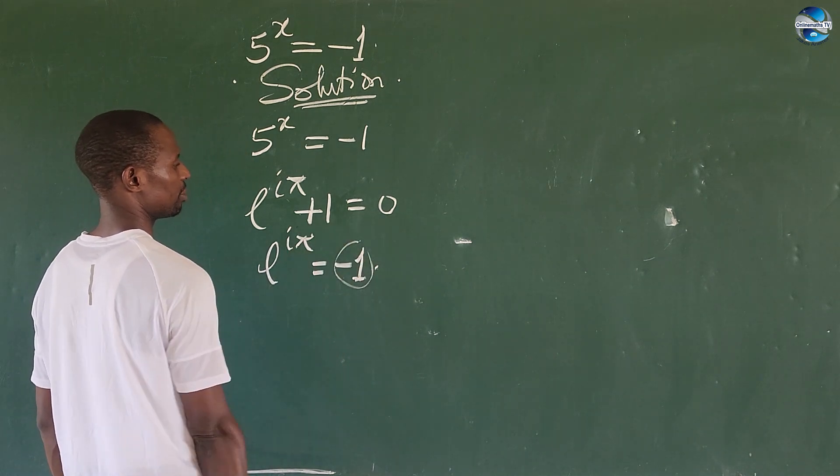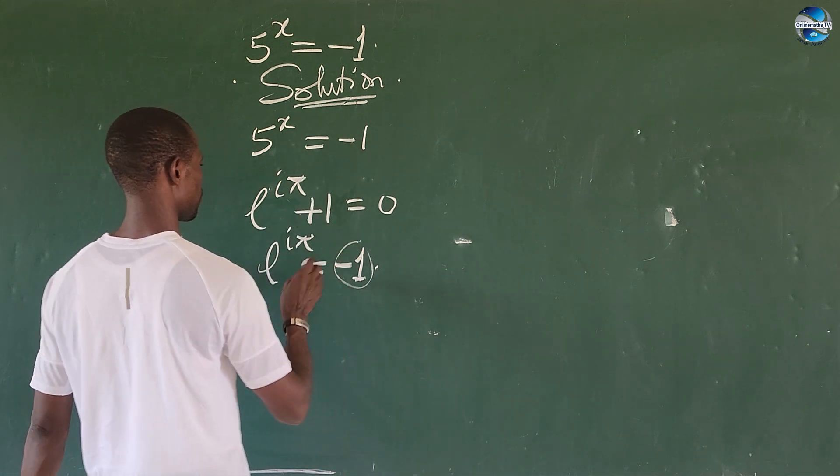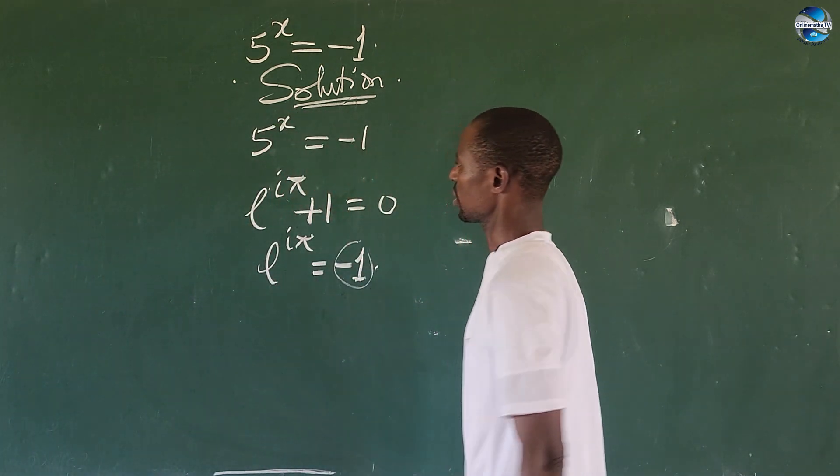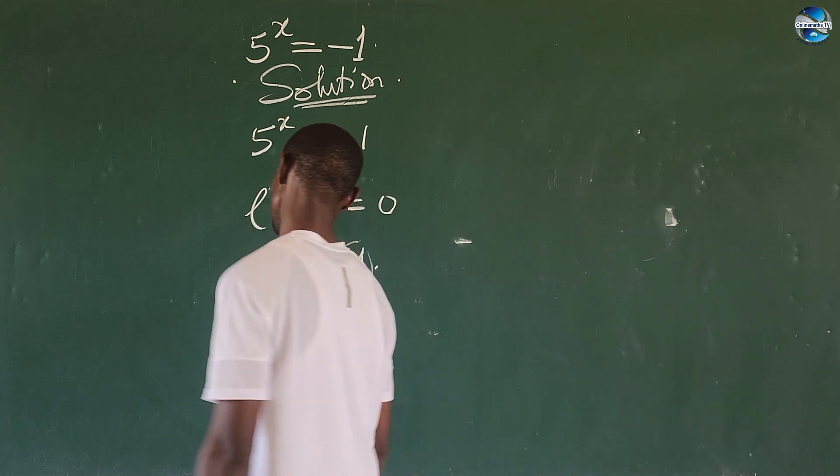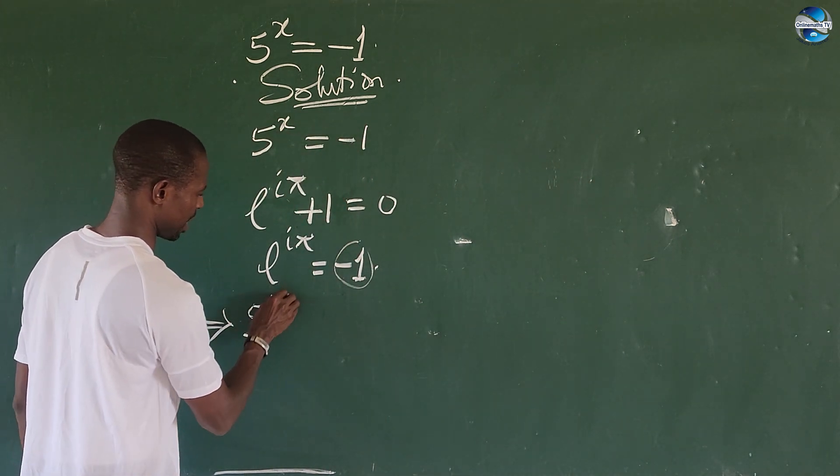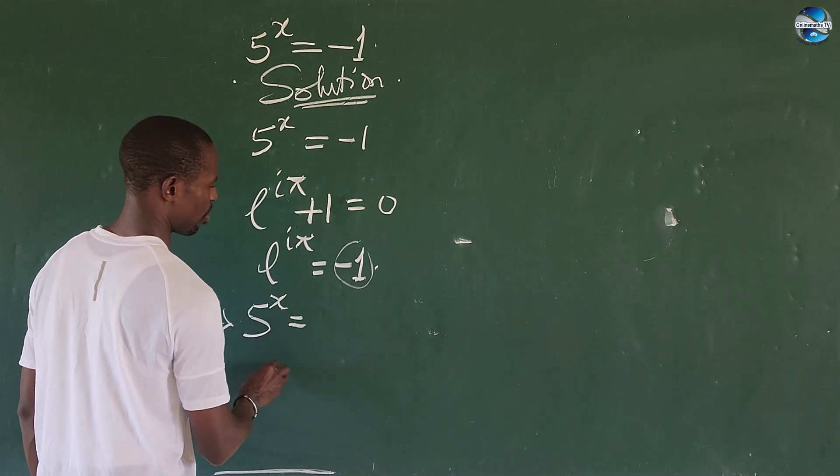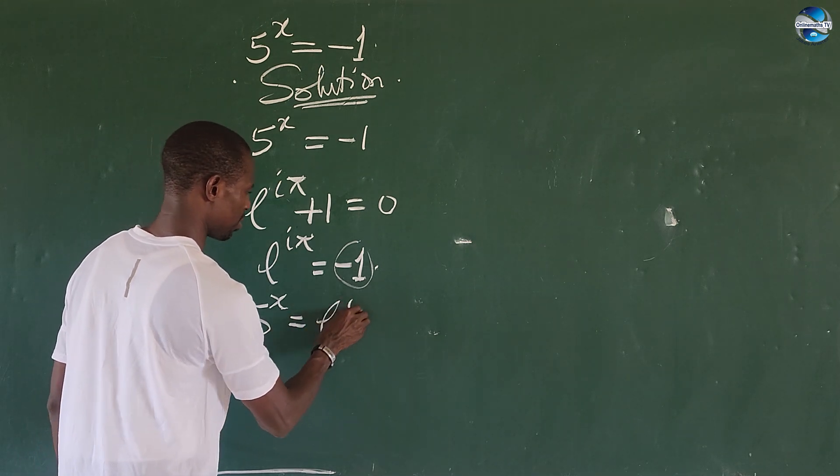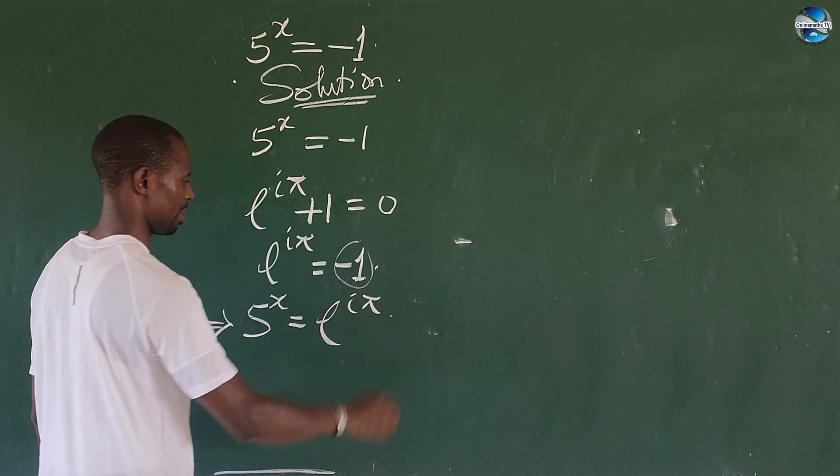So we can see that here we have minus 1 here, we have minus 1 and minus 1 is equal to this. So we can rewrite the original equation here. This is going to give us 5 to the power of x is equal to e to the power of i pi.